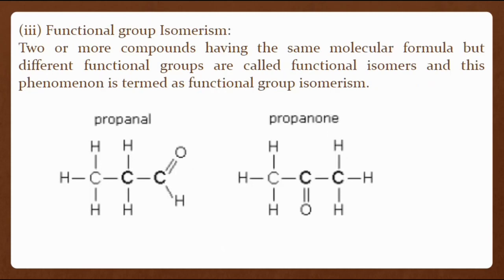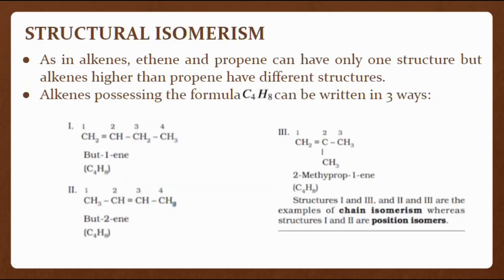The third type of structural isomerism is functional group isomerism. Two or more compounds having the same molecular formula but different functional groups are called functional isomers and this phenomenon is termed functional group isomerism. An example is propanal and propanone. As in alkenes, ethene and propene can have only one structure, but alkenes higher than propene have different structures. For example, alkenes with the formula C₄H₈ can be written in three ways: but-1-ene, but-2-ene, and 2-methylprop-1-ene. Structures 1 and 3, and 2 and 3, are examples of chain isomerism, whereas structures 1 and 2 are position isomers.